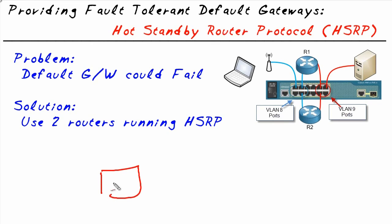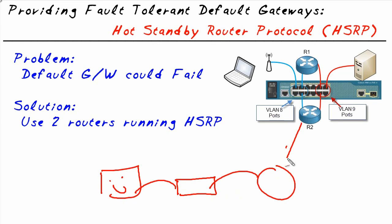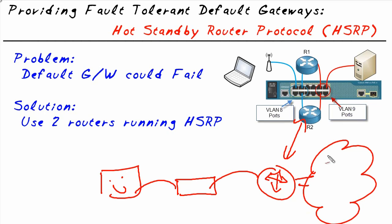A customer is a happy customer if that PC can get off of the local area network. From the PC, Mac, Linux, or what have you, we have a patch cable that goes to a switch, and from the switch it goes to a router with connections to additional networks. If the PC ever wants to get out to a remote network — something that's not local, different subnets — it needs to use this default gateway. A default gateway is a critical resource for every device on the network.